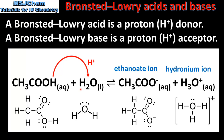By losing a proton, ethanoic acid forms the ethanoate ion, and by gaining a proton, water forms the hydronium ion. Two species that differ by a proton, such as ethanoic acid and the ethanoate ion, are known as a conjugate acid-base pair. Conjugate acid-base pairs will be covered in more detail in the next video.